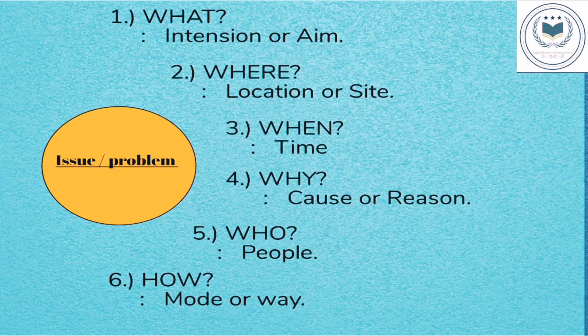First is 'what.' It refers to intention or aim. The questions are: what was the intention of the criminal? What was the aim or motto of the criminal? Or what offense has taken place? Or what offense has been committed? Second is 'where.' It refers to the location or site. The questions are: where is the crime committed? Where is the witness, accused, or suspect? Where is the location of the crime?